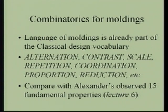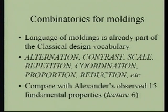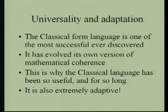I will now make a comparison with the 15 fundamental properties that were observed by Christopher Alexander in Lecture 6. When I go to Donald Ratner's notes, I see words like alternation, contrast, scale, repetition, coordination, proportion, reduction — but these are the words straight from the 15 fundamental properties. Donald Ratner does not know Alexander's work on the fundamental properties; he is giving us a 2,000-year-old system of construction which has evolved these properties independently. The classical design vocabulary already contains the universality, adaptation, and theory of hierarchies that I have been discussing in this series.